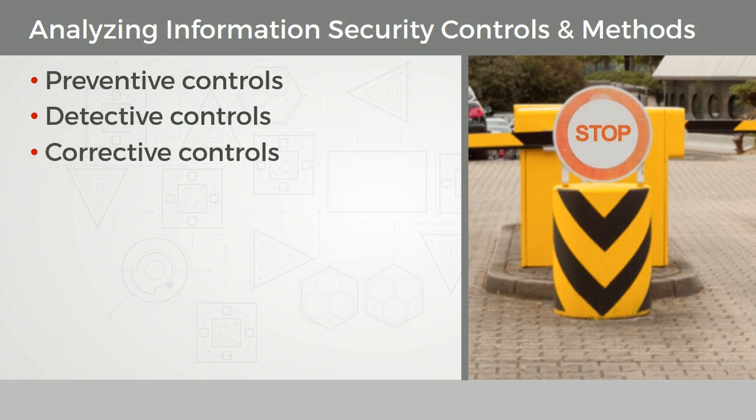Corrective controls is a remediation. It is an after-the-fact reaction to an impact. Backup and restore procedures are corrective. For example, if you get hit with ransomware, you'll do complete restoration from your backups. That's a corrective control — basically recovery mechanisms. After the recovery, we want to implement other types of controls so that it doesn't happen again or that we lower the impact next time it occurs.